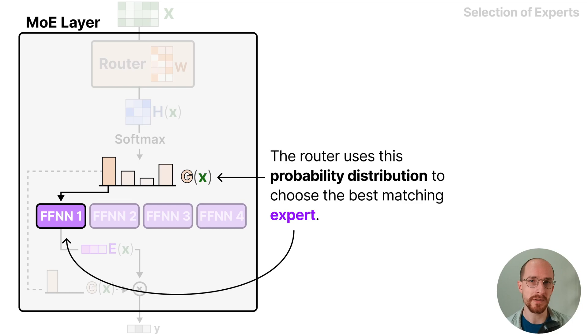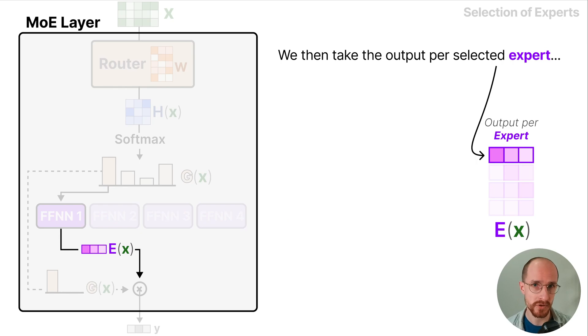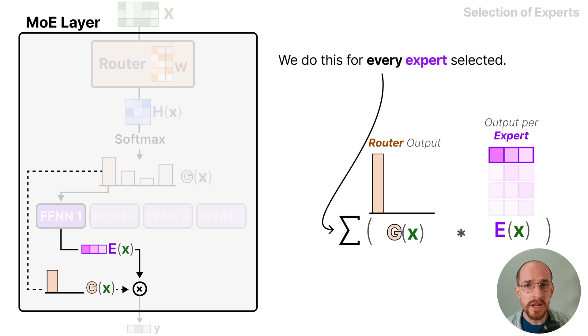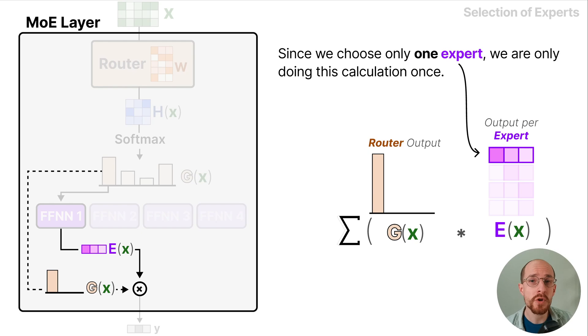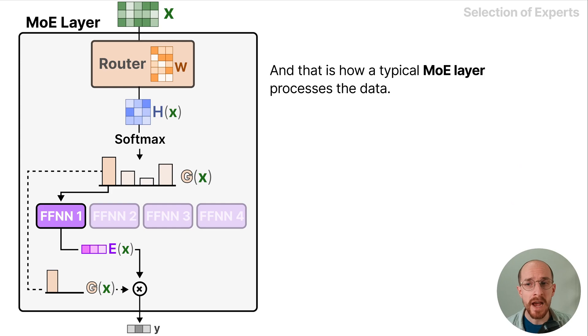The router uses this probability distribution to choose the best matching expert. We then take the output per selected expert and multiply that with the router probabilities. We do this for every expert selected. Since we chose only one expert we are only doing this calculation once. This creates our output one vector for each expert. And that is how a typical MoE layer processes the data.